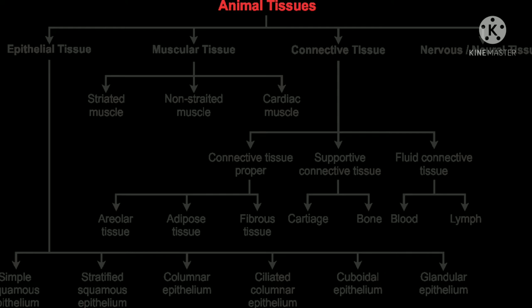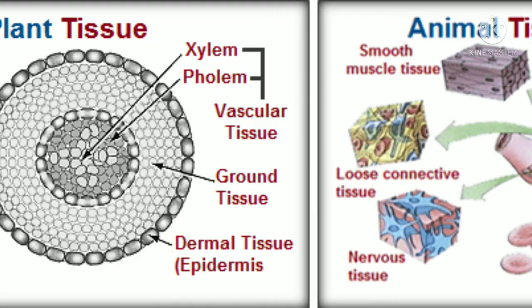Animal tissue is mainly divided into four types: epithelial tissue, muscular tissue, connective tissue, and nerve tissue. Epithelial tissue is further divided into squamous epithelium, cuboidal epithelium, ciliated epithelium, and columnar glandular epithelium. Muscular tissue is divided into striated muscle, smooth muscle, and cardiac muscle. Connective tissue is divided into four types: areolar, adipose, skeletal, and fluid connective tissue.